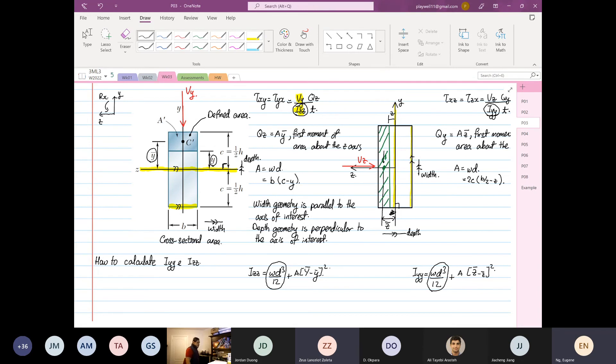So IZZ, the axis of interest is ZZ axis. Yes or no? So the width will be B. The depth will be 2C cubed over 12. So this will be 8BC cubed over 12. And this will be equal to 2BC cubed over 3. Because the width is B. The depth is your 2C.